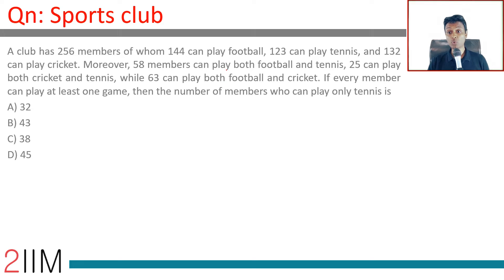A club has 256 members of whom 144 can play football, 123 can play tennis - I'm already thinking set theory - 132 can play cricket. 58 can play both football and tennis, 25 can play both cricket and tennis, 63 can play both football and cricket. So we've been given a, b, c, a intersection b, b intersection c, c intersection a.